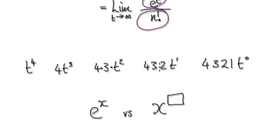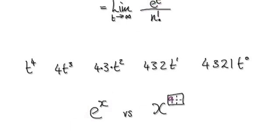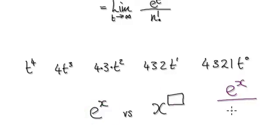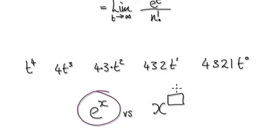We've seen this before: if you have a graph of y equals e to the power of x versus y equals x to the power of some large number — say 963 — eventually the exponential will overtake the polynomial. Because you can always apply L'Hôpital's rule repeatedly, the exponential will always overtake the polynomial, no matter how large the exponent.